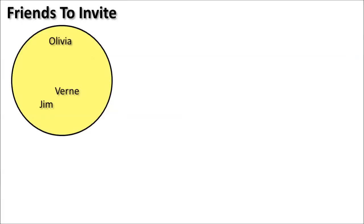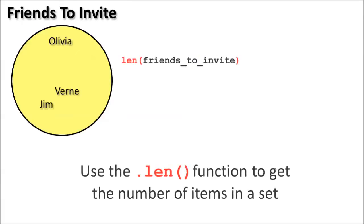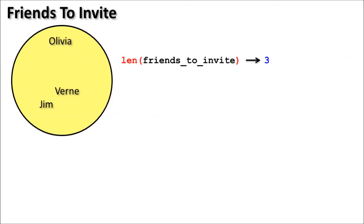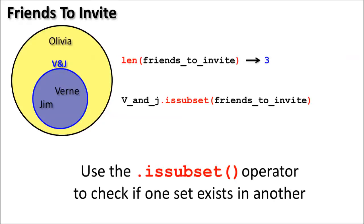If we want to check how many items are in the set, we can use the len function. Doing that to my set of friends reveals that I already have three friends in the set, so I can't invite anyone else because that's already a full game. However, I can use the issubset operator to check if the set containing Vern and Jim is already a part of the set of people I plan to invite. And doing so here reveals that yes, I had already planned to invite Vern and Jim because they're two of my really good friends. I guess I better give Vern a call back.